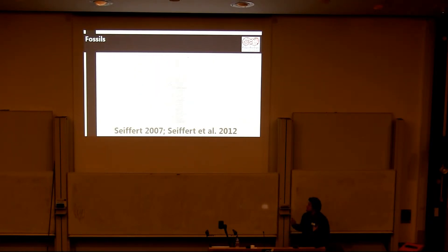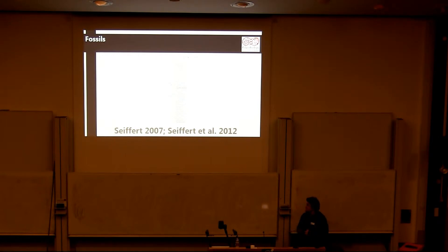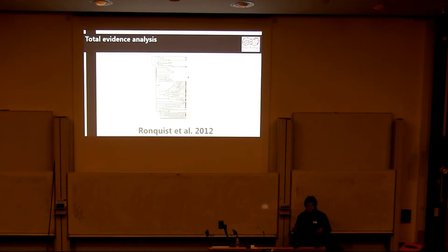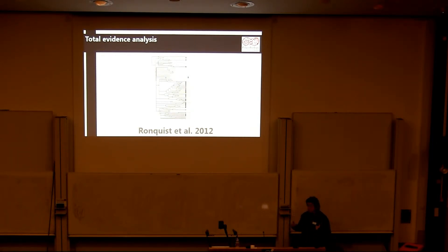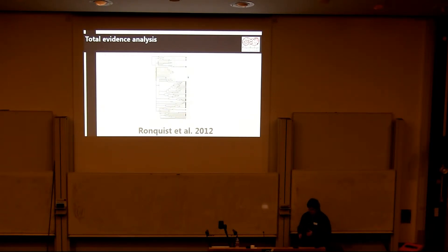There's also been work done on morphology in terms of cladistic morphological characters, containing both living and extinct species. Because these two things exist, it means we can incorporate them both together to do what's known as a total evidence analysis. This allows us to use both the molecular clock and the morphological clock to do a divergence time analysis that includes fossils as tips. This method was pioneered a couple of years ago by Ronquist.